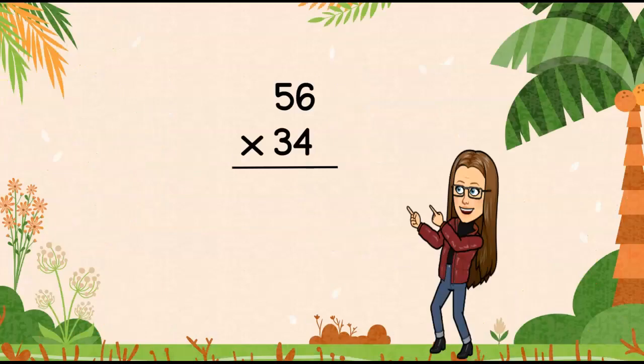Now I have a problem for you to do. Remember, I want you to estimate first. See where it's close. You can just round 60 times 30 and get an estimation and then solve your problem. Maybe you want to check it with another strategy that we used. So bring in this problem with an answer. And if you get it wrong, we'll work through it together and figure out where that error occurred. But you'll get a sticker either way.